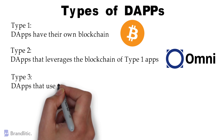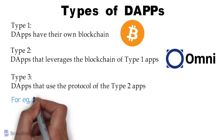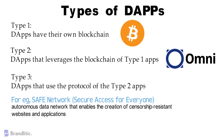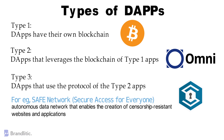Type 3: these DAPs use the protocol of Type 2 applications. The SAFE network, where SAFE stands for Secure Access for Everyone, is an example of a Type 3 DAP. It is a decentralized data storage and communication network that replaces data centers and servers with the additional computing resources of its users. You can consider it as an autonomous data network that enables the creation of censorship-resistant websites and applications. It leverages the Omni protocol for issuing safe coins used to allow for its functional aspects.